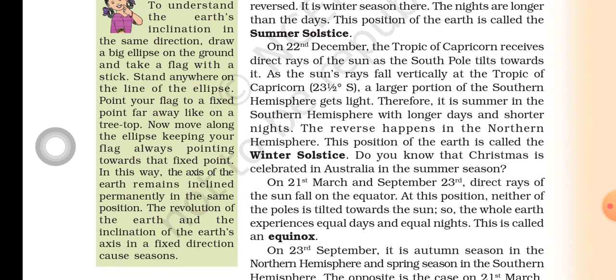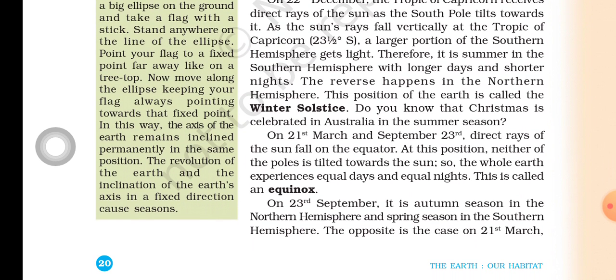On 22nd December, the Tropic of Capricorn receives direct rays of the sun as the south pole tilts towards it. As the sun rays fall vertically at the Tropic of Capricorn — 23.5 degrees south — a large portion of the southern hemisphere gets light. Therefore, it is summer in the southern hemisphere.